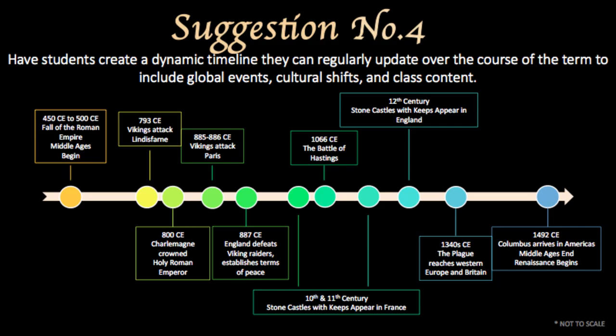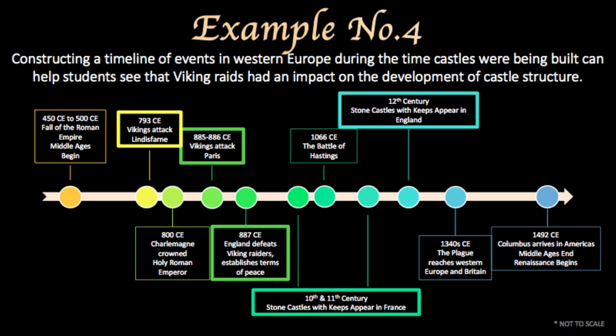Suggestion number four: when studying art history, there are a lot of dates involved and after a while they can start to blur together. Have students create a dynamic timeline they can regularly update over the course of the term to include global events, cultural shifts, as well as class content. The timeline can provide students with contextual knowledge that can help them remember information. For example, constructing a timeline of events in Western Europe during the same time castles were being built can help students see that Viking raids had an impact on the development of castle structure. When studying medieval castles, I can remember that France built fortress-style castles well before the English because they built them as a defensive response to Viking raids. Britain was more united than the rural segmented French, so while the English could fight the Vikings off, France's elite had to find ways to protect themselves and their tenants.